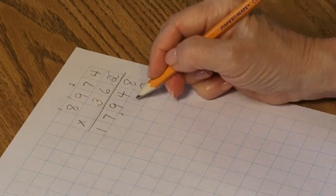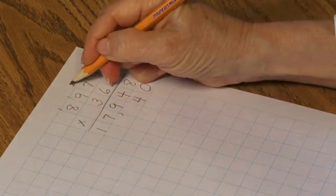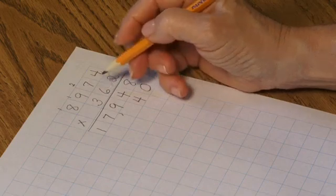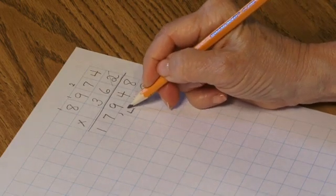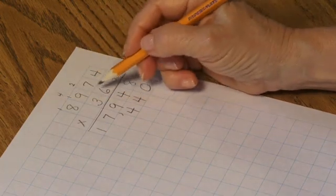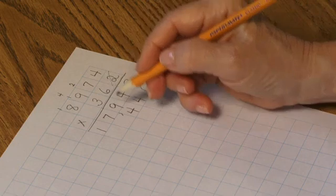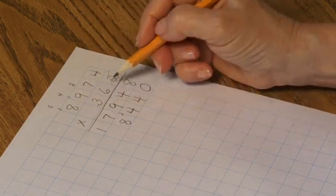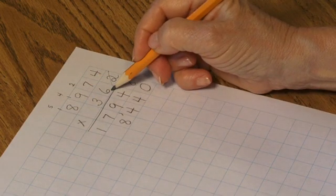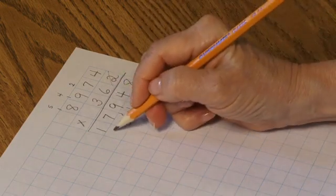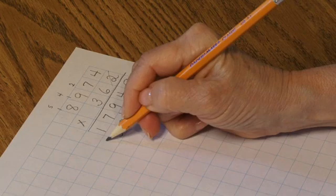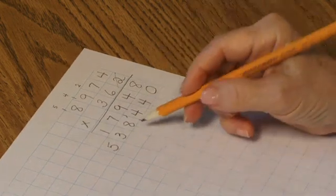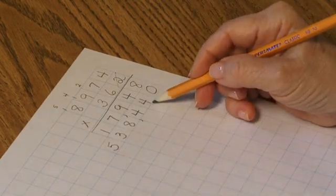4 taken 6 times equals 24. Record the 4. Carry the 2. 7 taken 6 times equals 42 plus 2 equals 44. Record the 4. Carry the 4. 9 taken 6 times equals 54 plus 4 equals 58. Record the 8. Carry the 5. 8 taken 6 times equals 48 plus 5 equals 53. Record the 3. Record the 5. So my second partial product is 538,440.